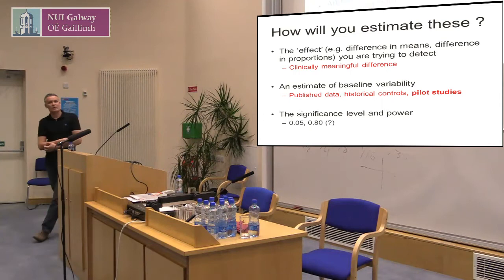An estimate of baseline variability — where are you going to find this? Published data — that's probably your best bet.